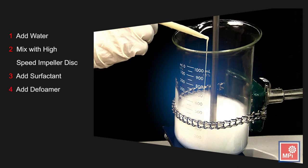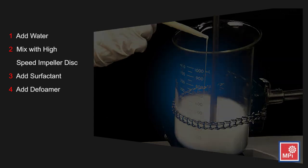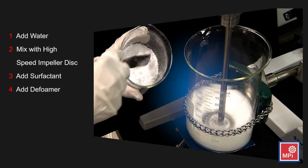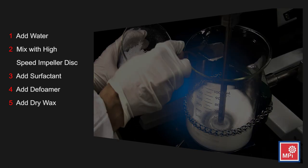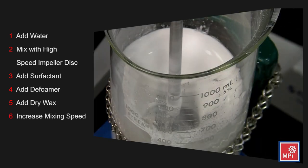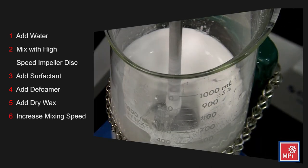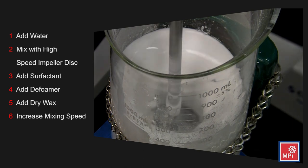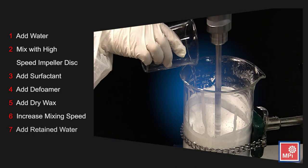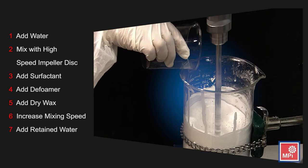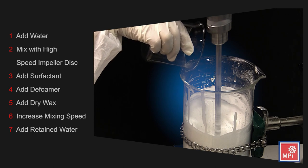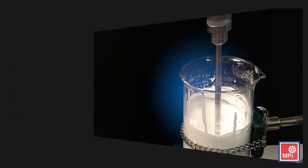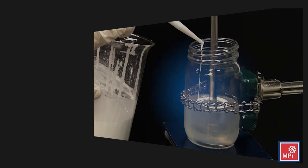Add a defoamer to minimize any foam generated by the surfactant. After three minutes of mixing, add the dry powdered wax. Increase the mixing speed to 1600 revolutions per minute and mix for 30 minutes. Add the balance of the formulation's water to the dispersion and reduce the mixing speed to 800 revolutions per minute for three minutes. You now have a properly dispersed wax that can be added to any waterborne formulation.